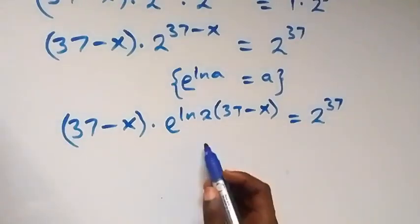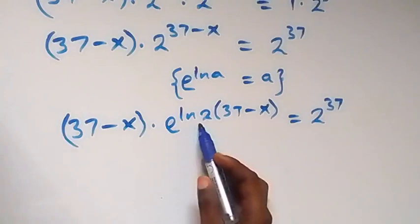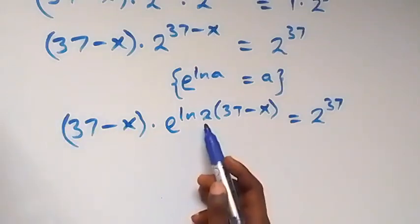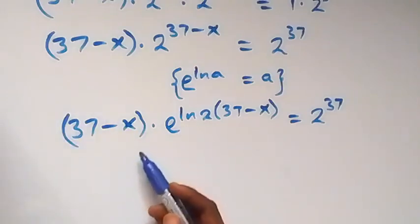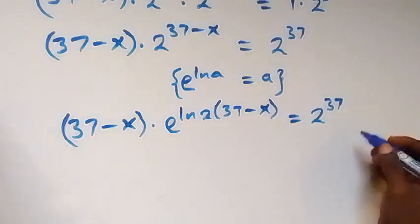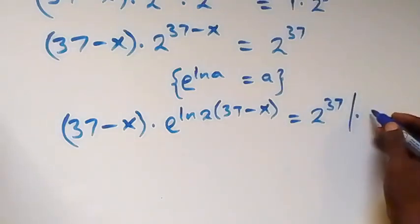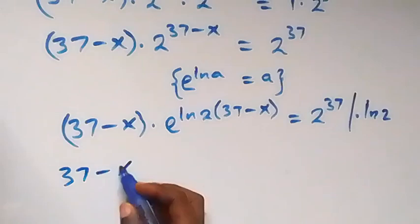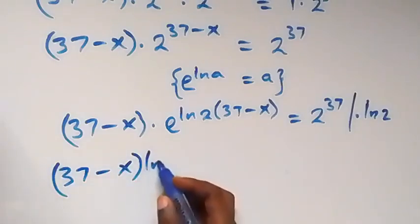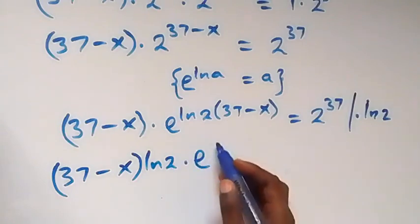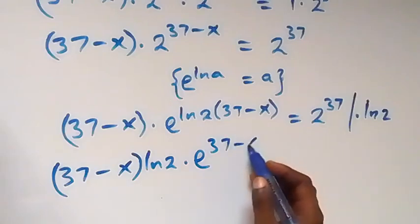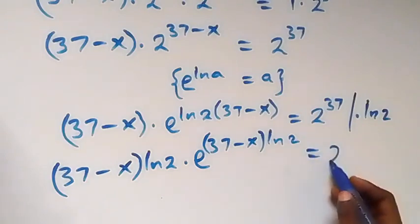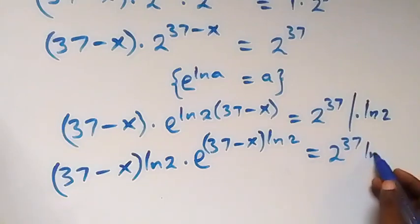We have ln 2 in the power. Since we want to make the power the same as the coefficient, let's multiply by ln 2, which implies we multiply this side as well by ln 2. So multiplying by ln 2 here, this becomes 37 minus x times ln 2, then multiplied by e raised to power 37 minus x times ln 2, now equals 2 raised to power 37 times ln 2.